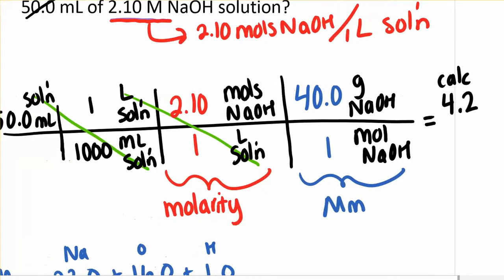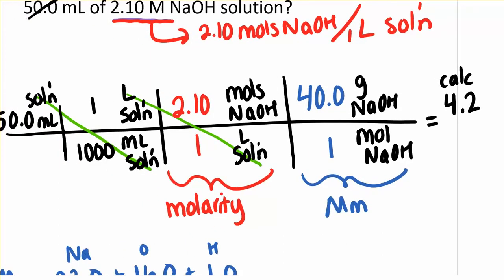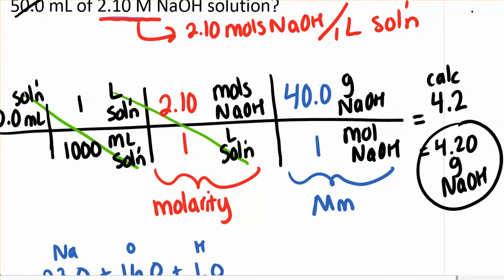But there's a problem with that. If you look at our significant figures, we need to have three sig figs in our answer because everything has three. These are exact, of course. So to get three sig figs, my calculator doesn't know to add that zero. Very good.